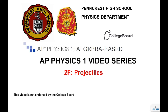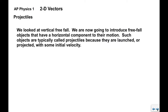Hello everyone, this is the Pencrest High School AP Physics 1 video series. This is video 2F: Projectiles. We've already looked at vertical freefall; we're now going to introduce freefall objects that, in addition to vertical motion, have a horizontal component to their motion. Typically these objects are called projectiles because they are launched or projected with some initial velocity.